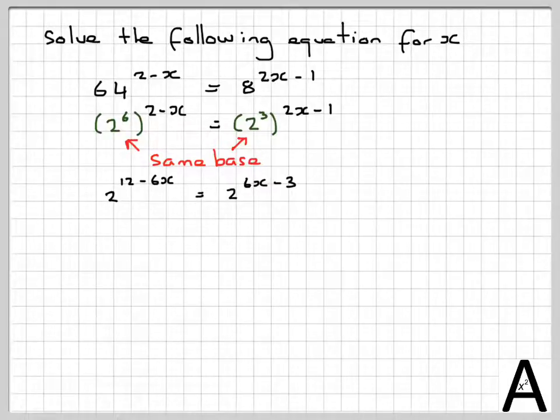So the rule we've used there is a to the power of m, all to the power of n, is equal to a to the power of mn.